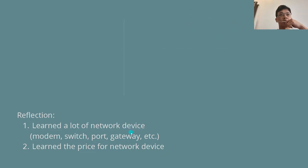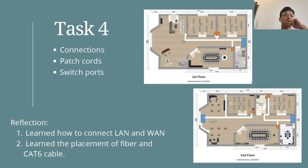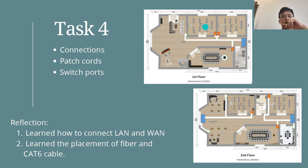Then in task four, my part was to do the connections — the number of ports, the number of patch cords, and switch ports required to set up the local area network and also the wireless area network. I also learned how to place the fiber and CAT6 cable. In this diagram, the right side represents the fiber, and the wire connected to the PC is the CAT6 cable.